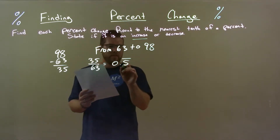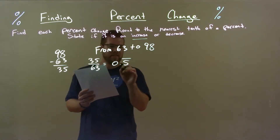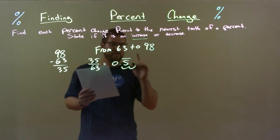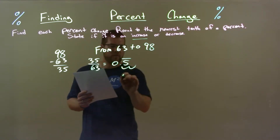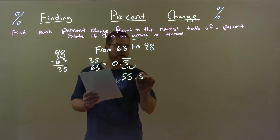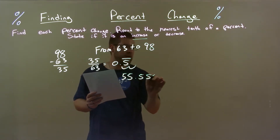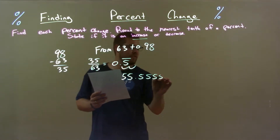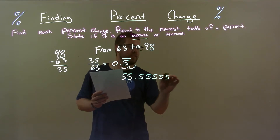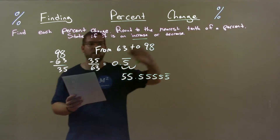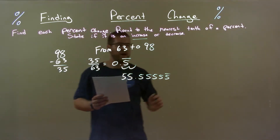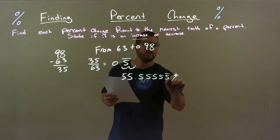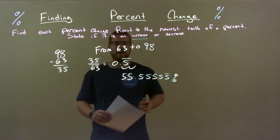Now this as a decimal percent — move two spots to the right — that's 55.55555..., repeating on forever, percent.